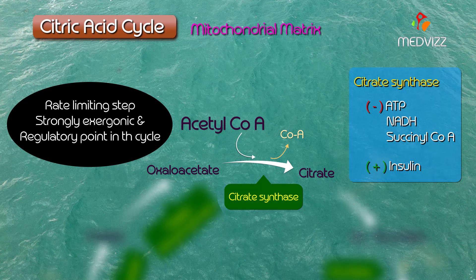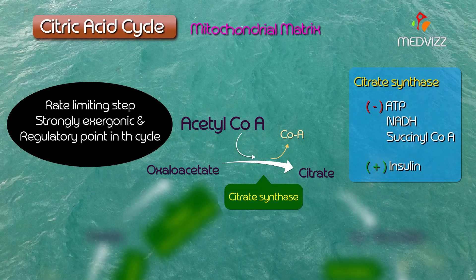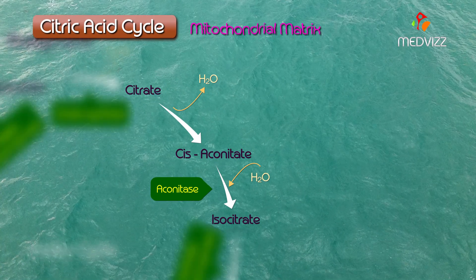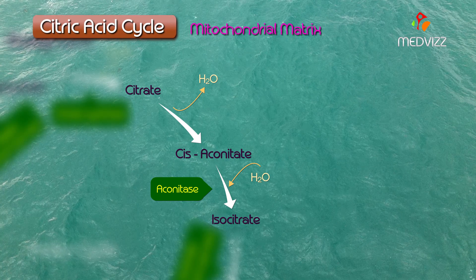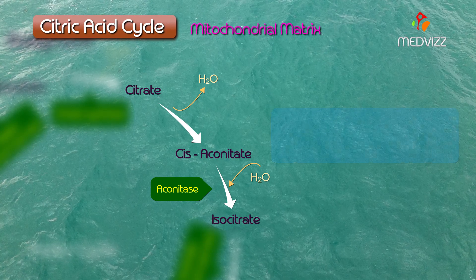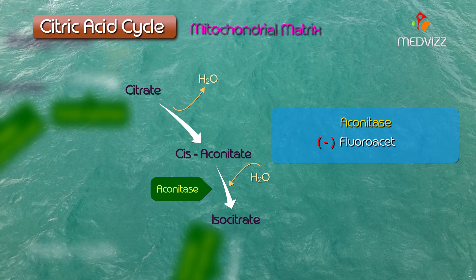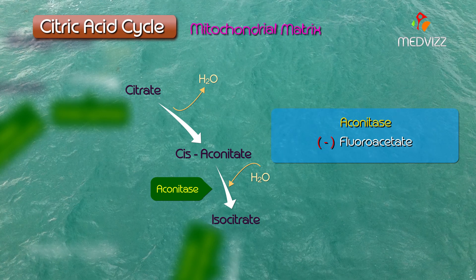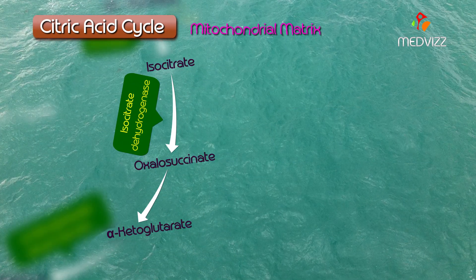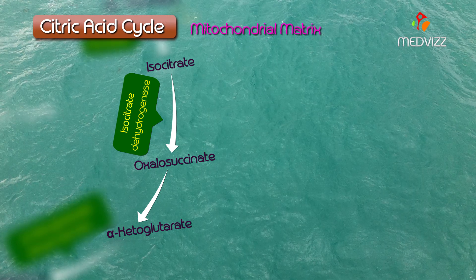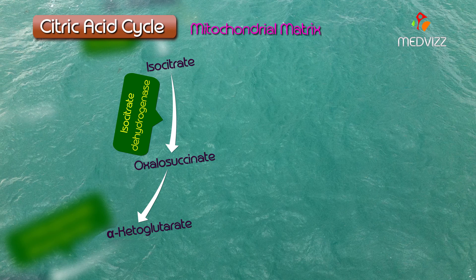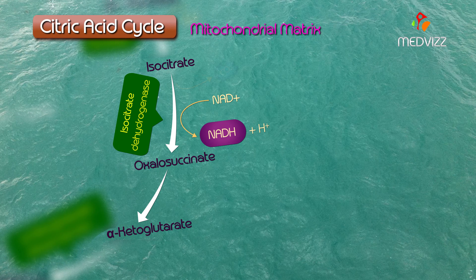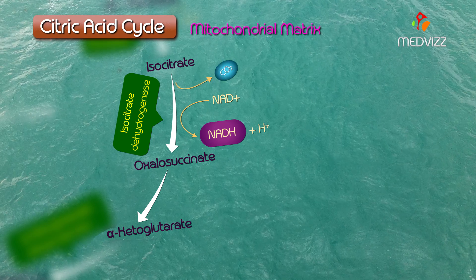Citrate synthase is the rate-limiting step of the TCA cycle — a strongly exergonic step and a regulatory point in the cycle. The next step is aconitase, which catalyzes the isomerization of citrate into isocitrate. Fluoroacetate, a metabolic poison, inhibits the enzyme aconitase. Next is isocitrate dehydrogenase, which catalyzes the oxidative decarboxylation of isocitrate into alpha-ketoglutarate, converting NAD+ into NADH and releasing the first molecule of CO2.